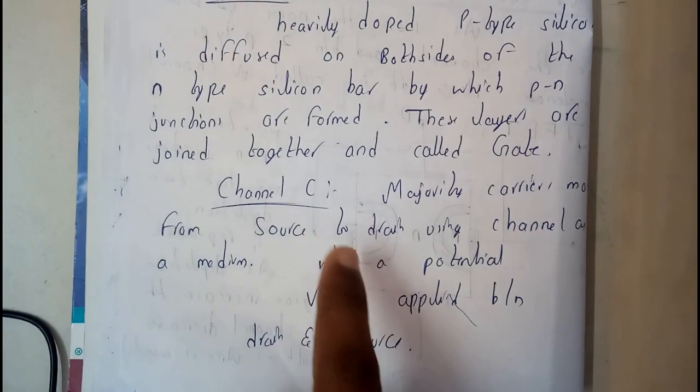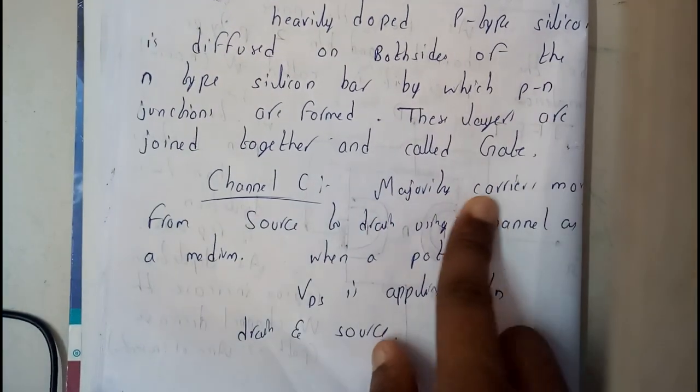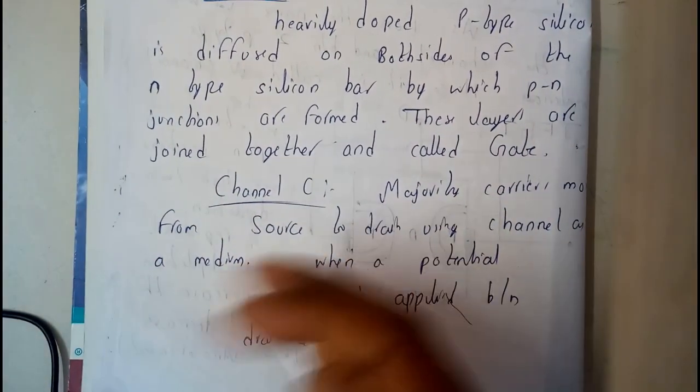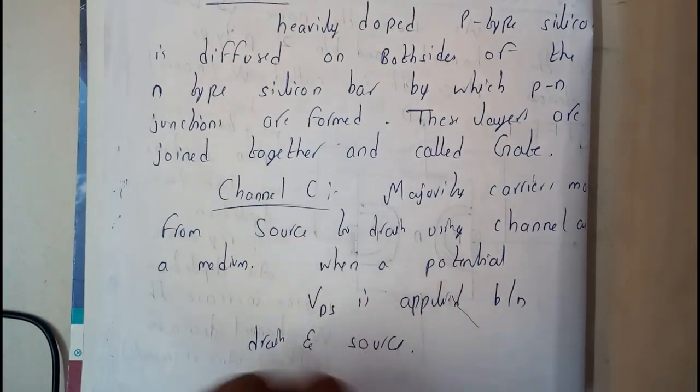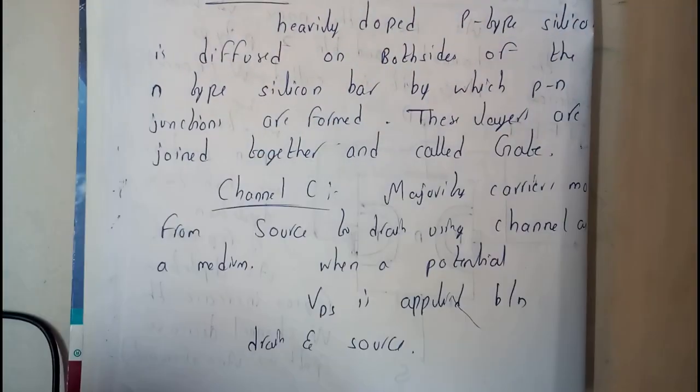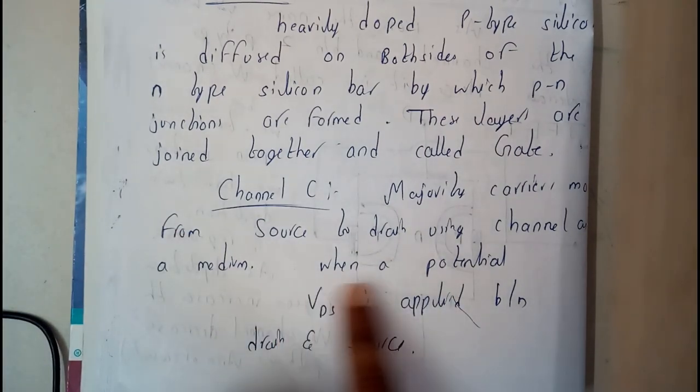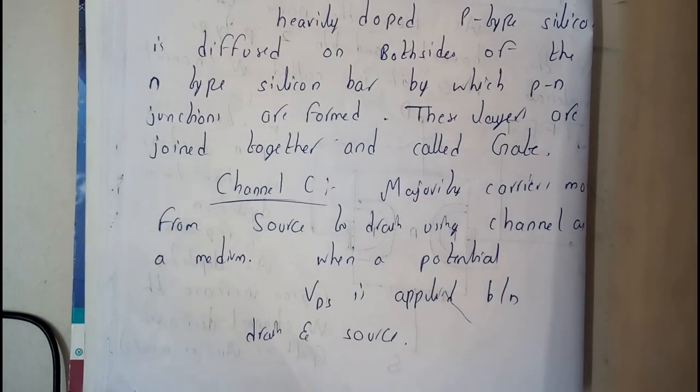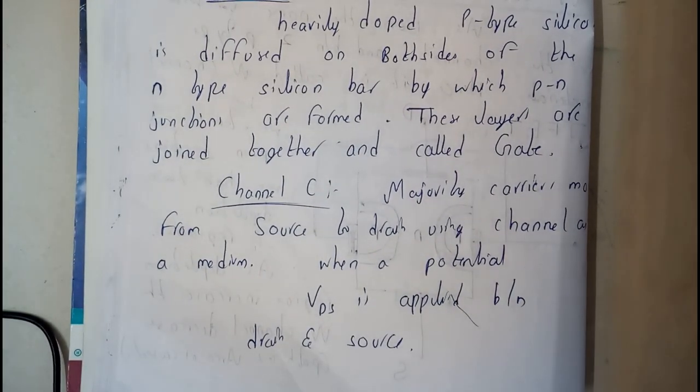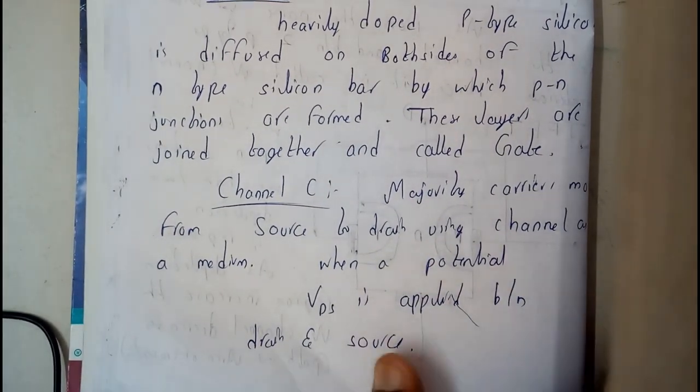Channel: the majority carriers move from source to drain. In this path, the space where they travel, we call it as a channel. The medium when the potential VDS is applied between the drain and source.